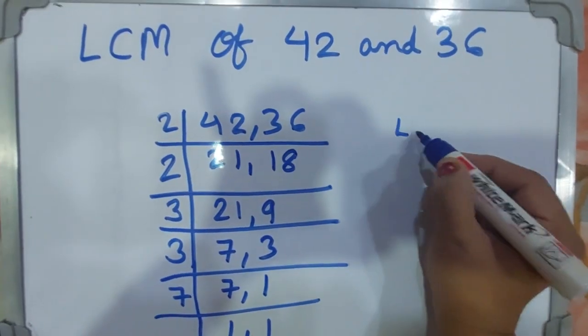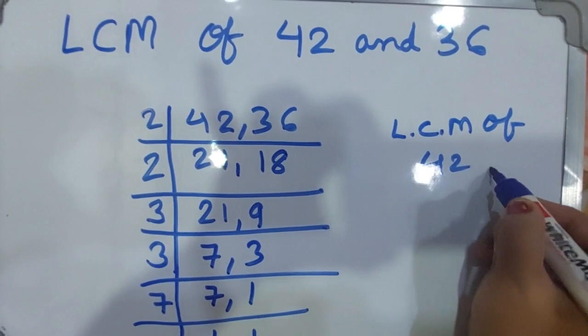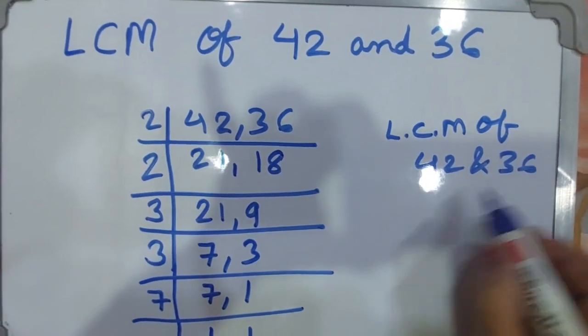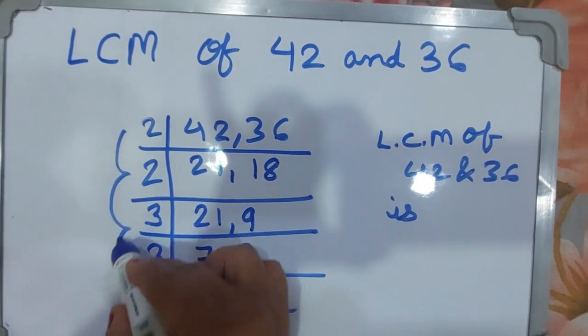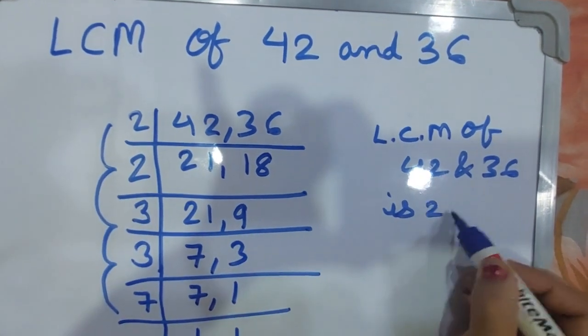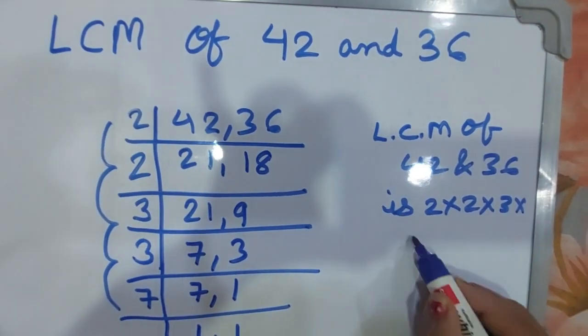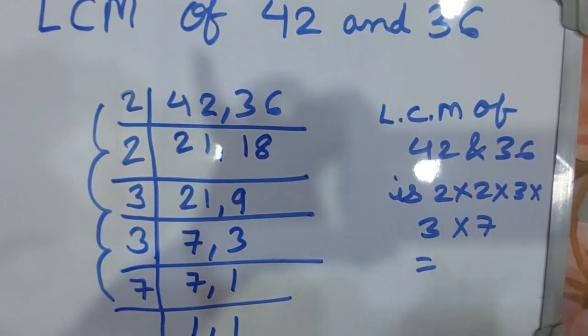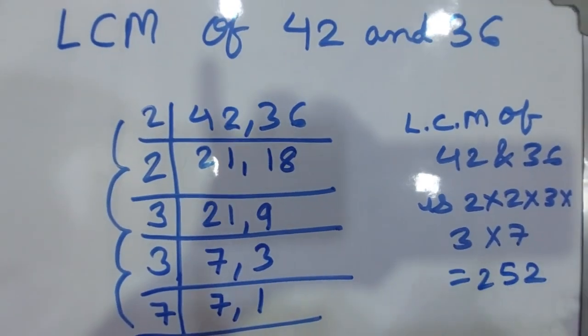Now you can write the LCM of 42 and 36. Multiply all these numbers: 2 times 2 is 4, 4 times 3 is 12, 12 times 3 is 36, 36 times 7 is 252. This is your answer.